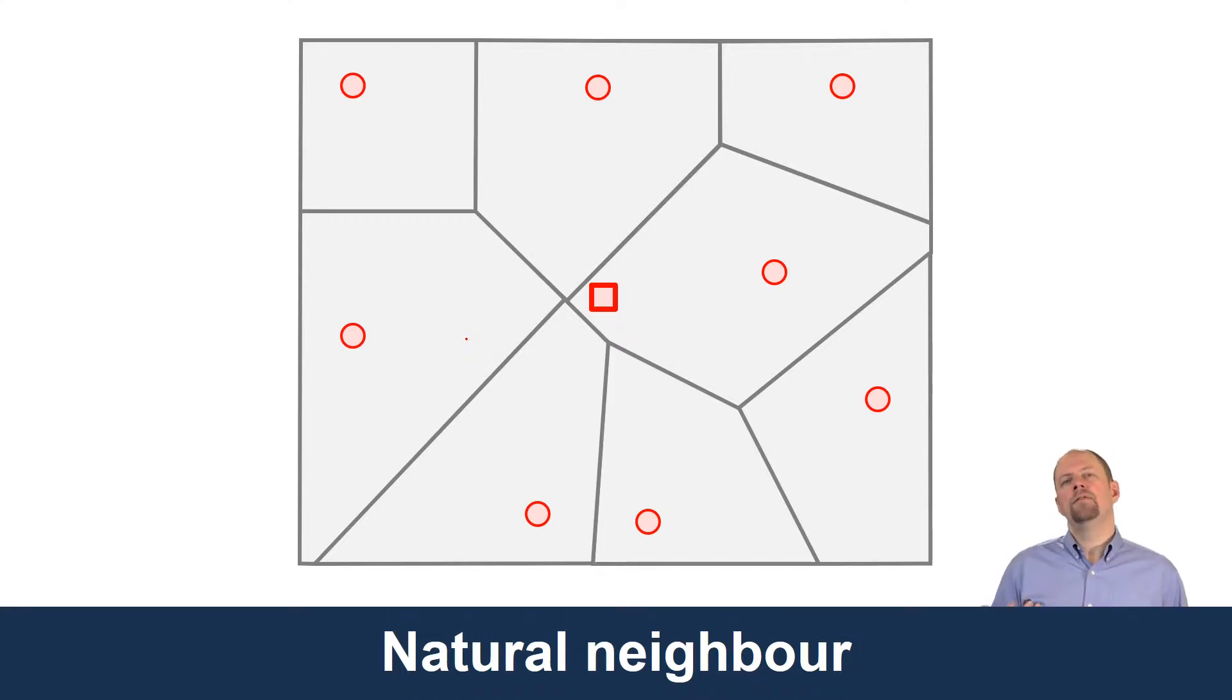If we want to implement Tobler's Law and use nearby values to help estimate that location, making the assumption that the values will be similar, how can we do that? How can we take advantage of that?